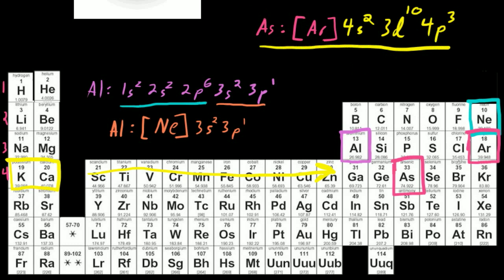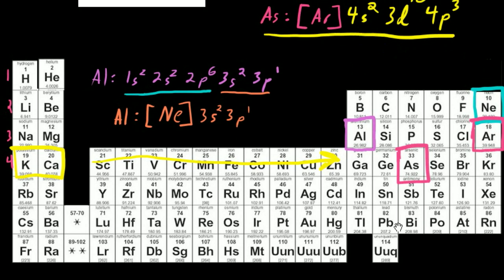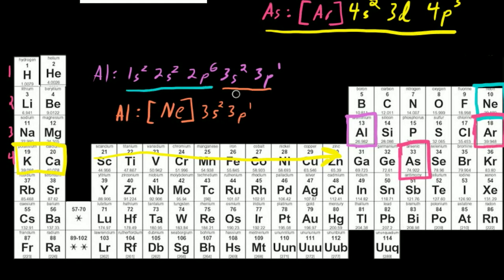Let's do one more — let's do iodine. Iodine is atomic number 53. We have to find the nearest previous noble gas. The nearest overall noble gas would be xenon, but we need the nearest previous noble gas because we have to add electrons on — we can't take electrons away from xenon. So the nearest previous noble gas would be krypton.